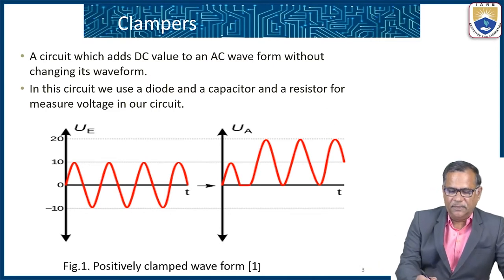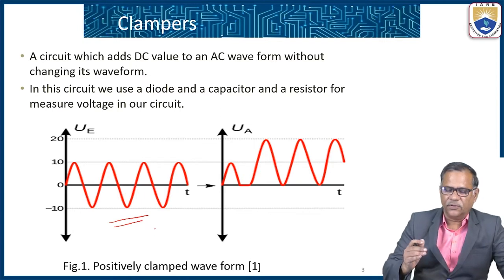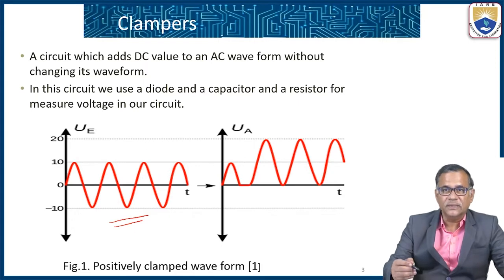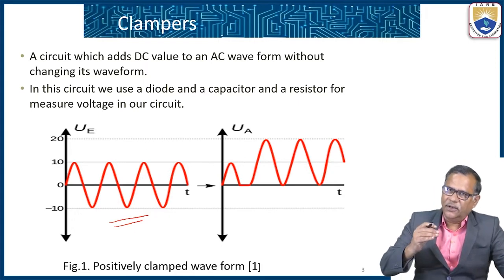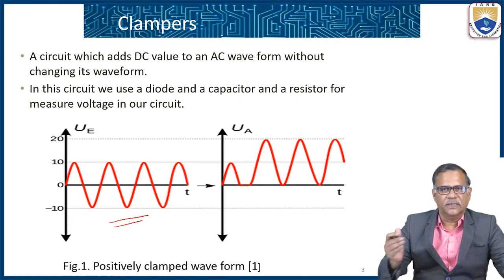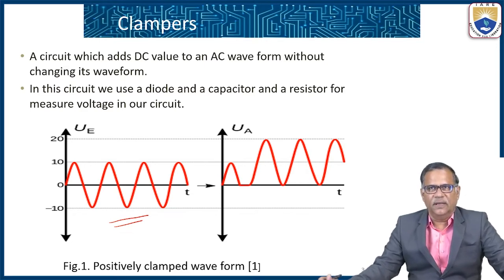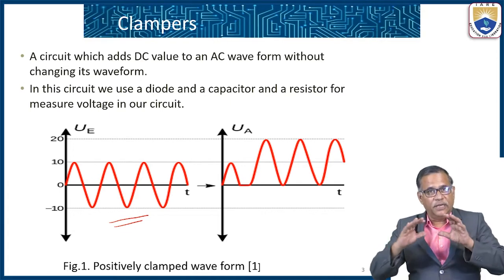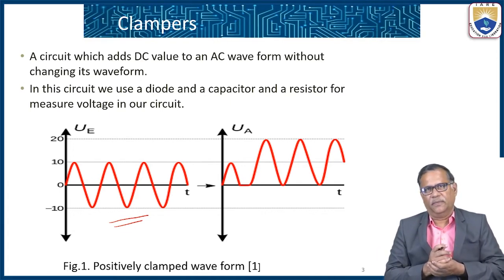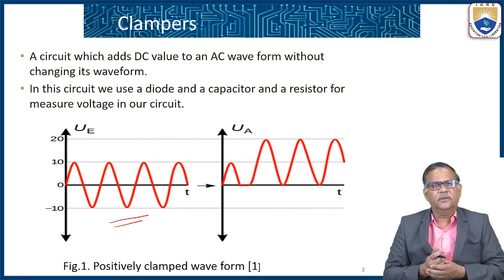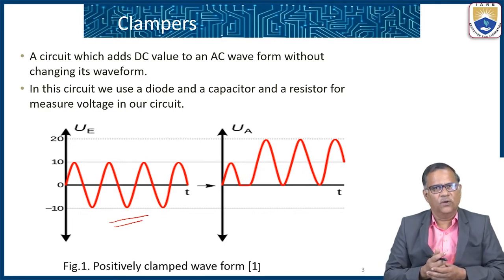This is the basic AC signal which has an average value of 0. Using the clamping circuit, the signal is shifted up — it is positively clamped and the DC value becomes positive. A circuit which adds a DC value to the AC waveform without changing the shape of the waveform is called a clamper. Here we use a diode, a capacitor, and a resistor, and also a reference voltage if required.